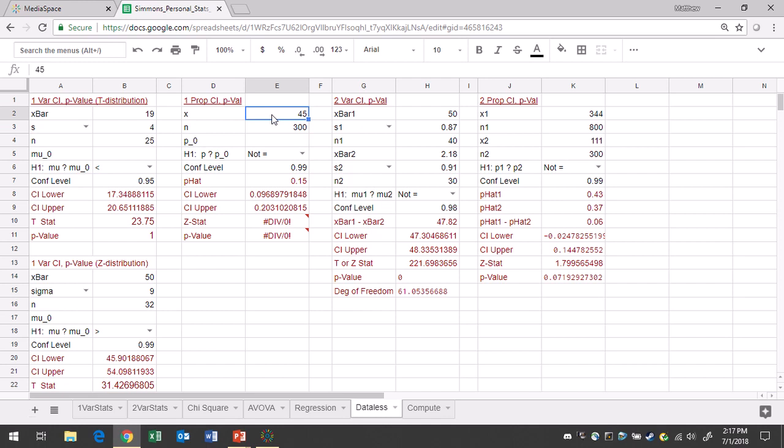My x in this case will be 41.6. My sample size n is 160. The only other piece of information you need is a confidence level of 0.99.